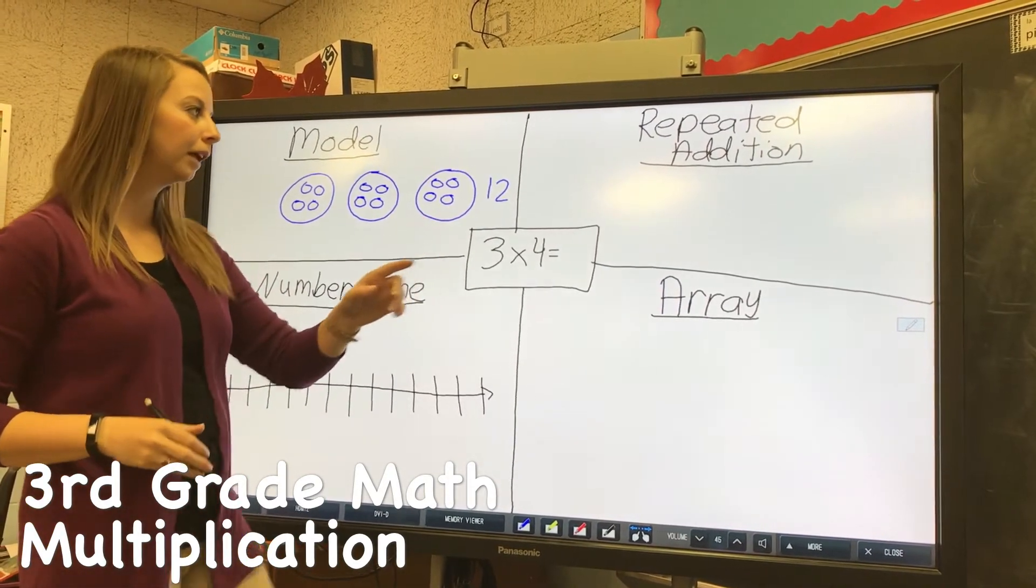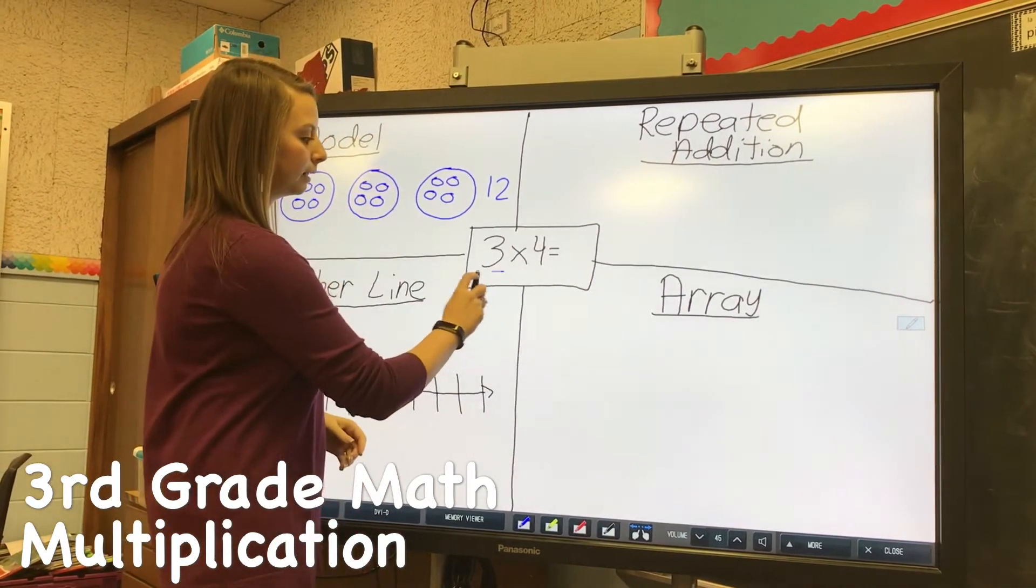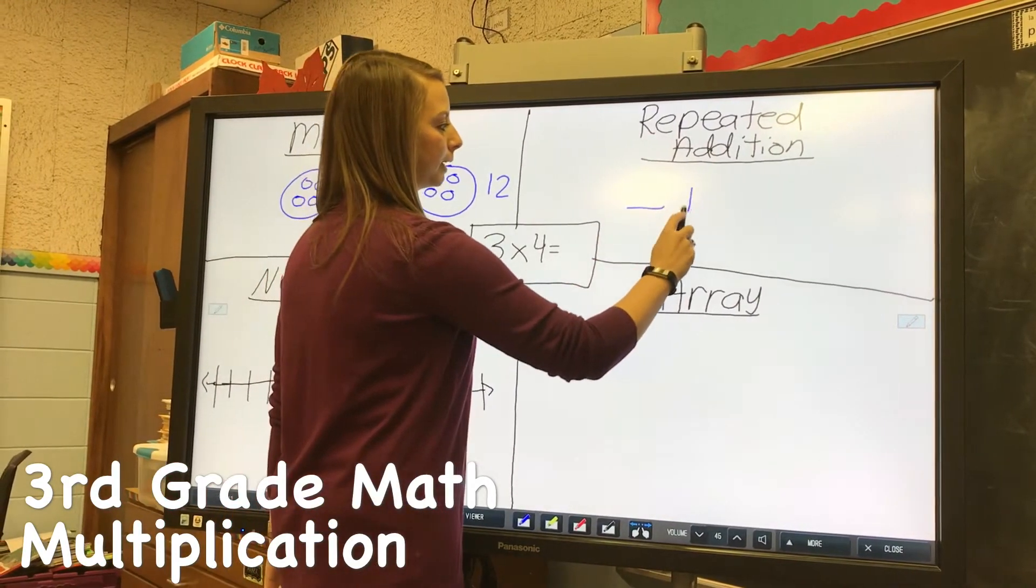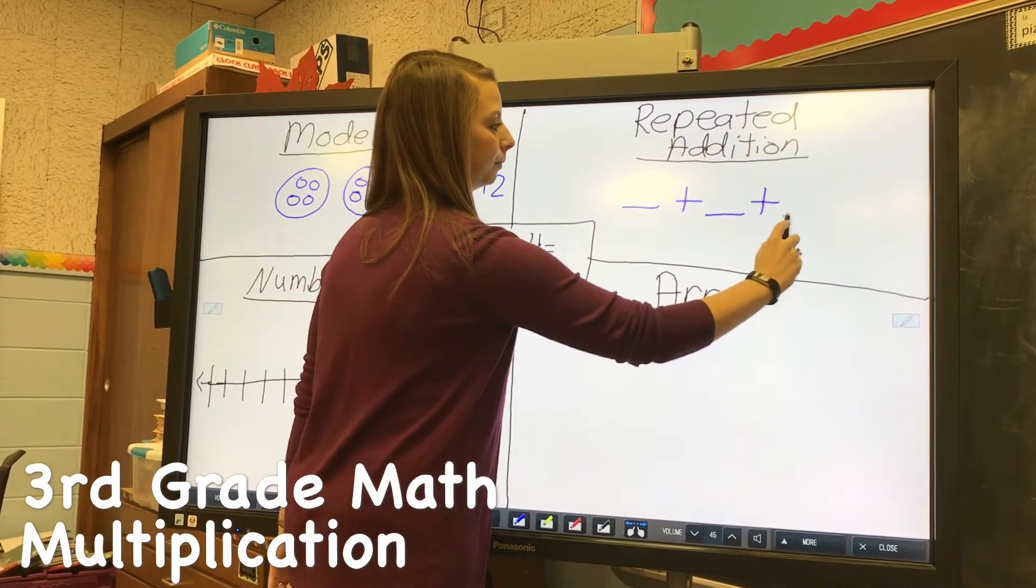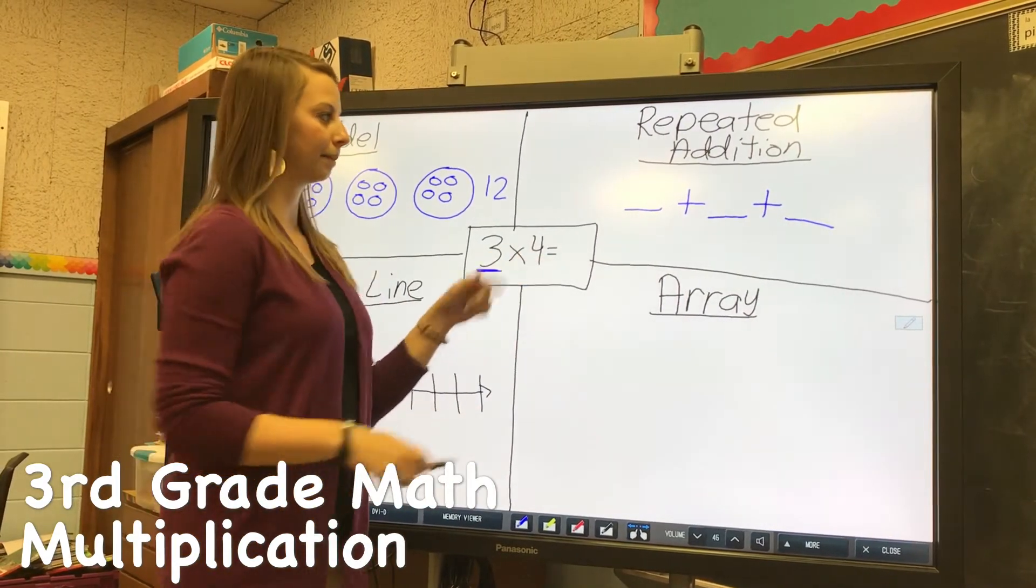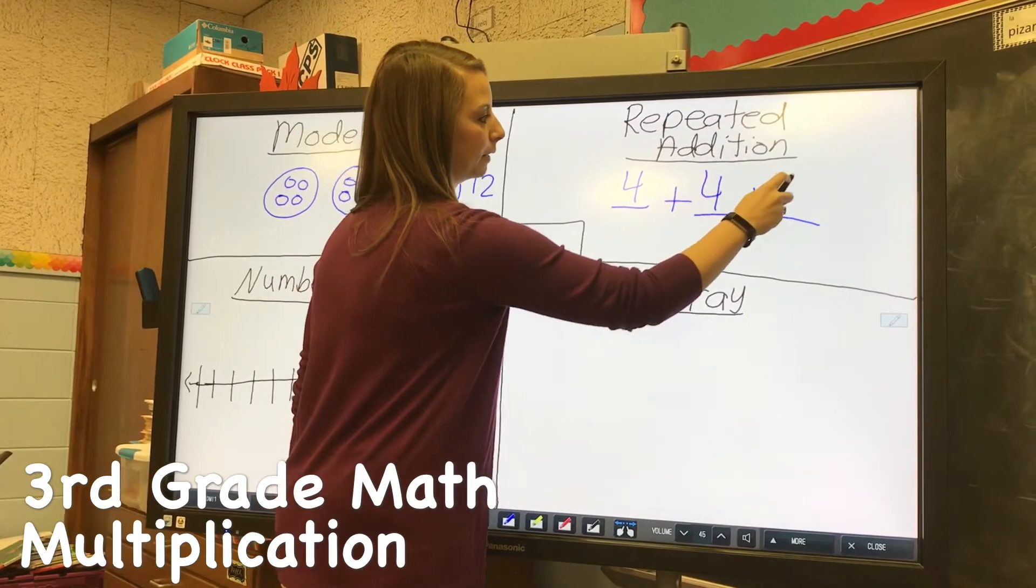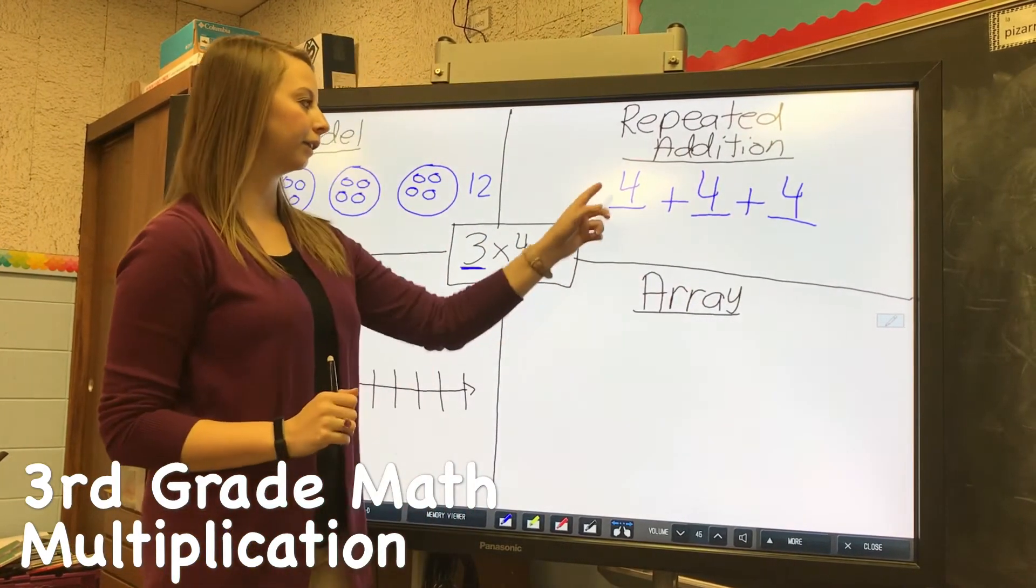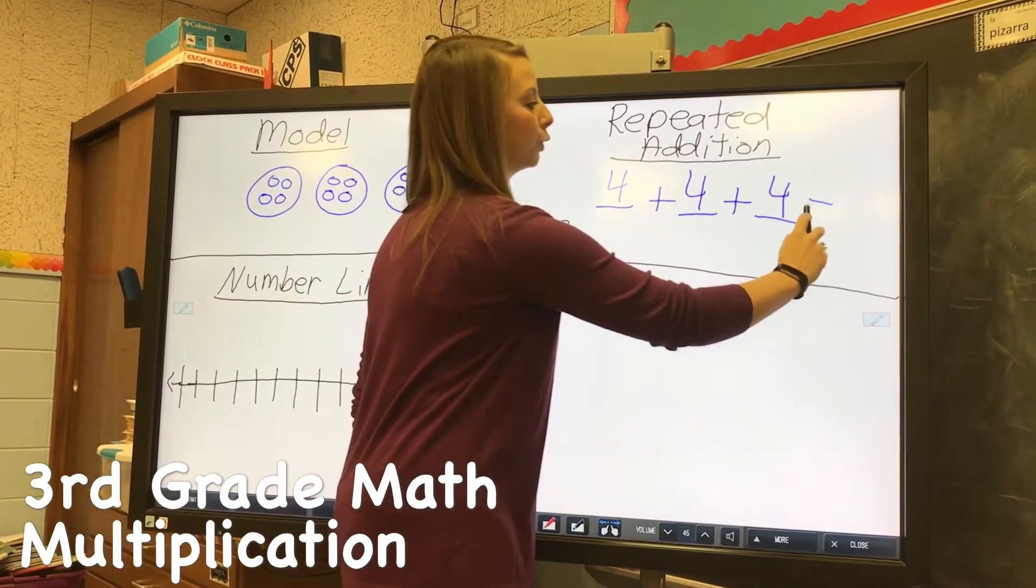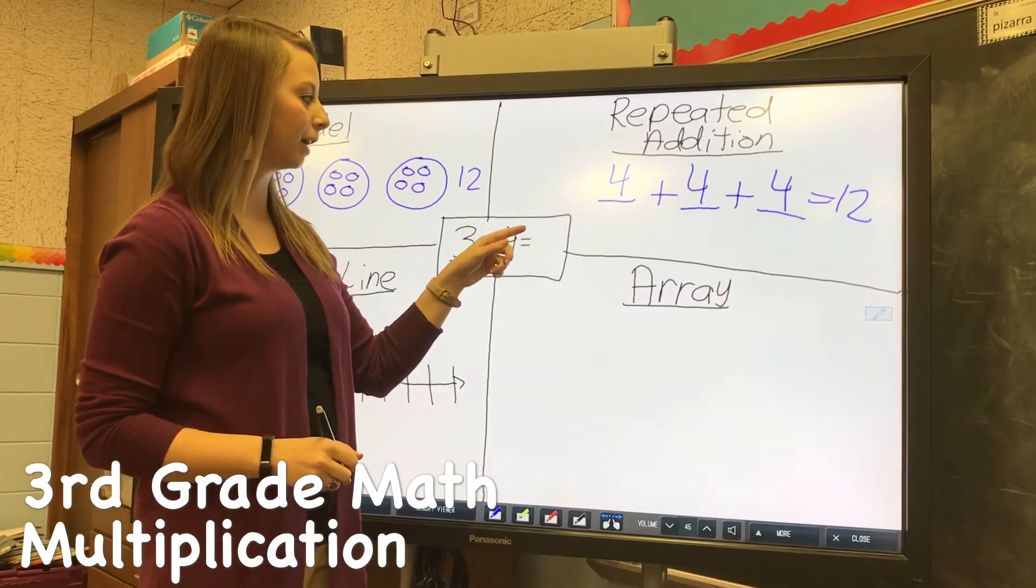Another way you can do it is repeated addition. I'm going to take this number three and draw three spaces, and I'm going to add four together three times. So I draw my three spaces and then fill these in with my other number as four. I can do 4+4 is 8, plus 4 more is also 12. You want to make sure you're getting the same answer throughout all of the different strategies.